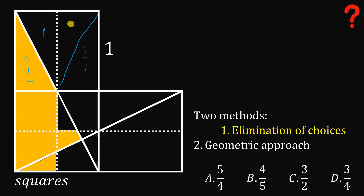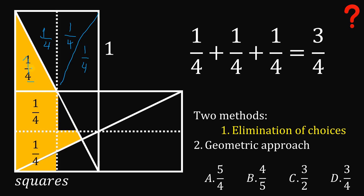This right triangle is just one fourth of the whole square — so we have one fourth here, one fourth here, one fourth here, and one fourth for this piece as well. Adding one fourth plus one fourth plus one fourth gives us three over four. Since the shaded region includes an extra piece beyond those three fourths, the area must be greater than three over four. So choice D (3 over 4) is eliminated.